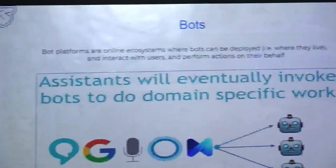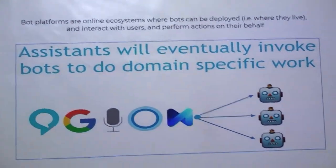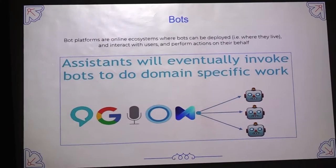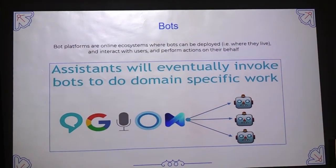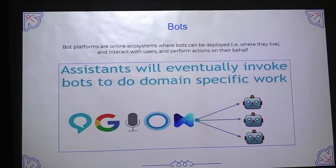Generally a bot is a small software program. It can run repeatedly in a continuous manner. In the bot we need to have a bot platform ecosystem - ecosystems which can be deployed and interact with the users and perform actions on their behalf. Generally bots like Google Bot and Siri Bot are informational bots. These bots contain information and knowledge in nature and are able to interact with the users. Assistants will eventually invoke bots to do domain-specific work.